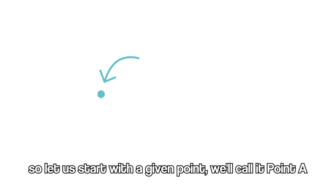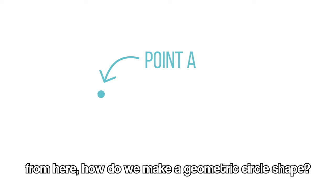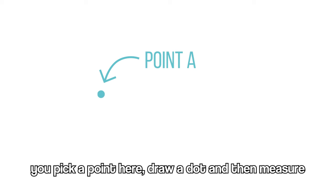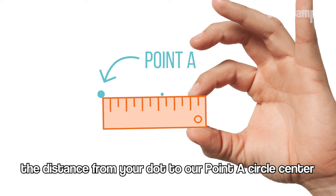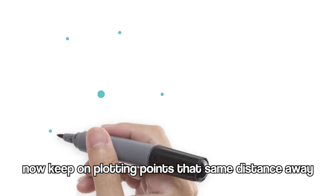So let us start with a given point, we'll call it point A. From here how do we make a geometric circle shape? You pick a point here, draw a dot and then measure the distance from your dot to our point A circle center. Now keep on plotting points that same distance away.